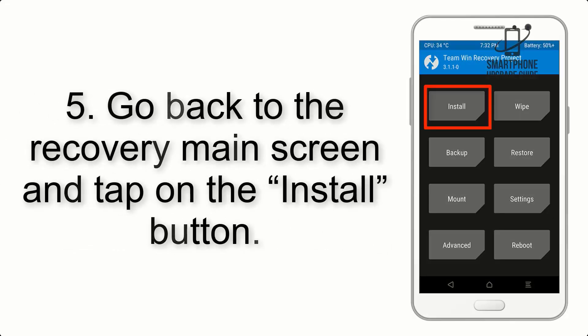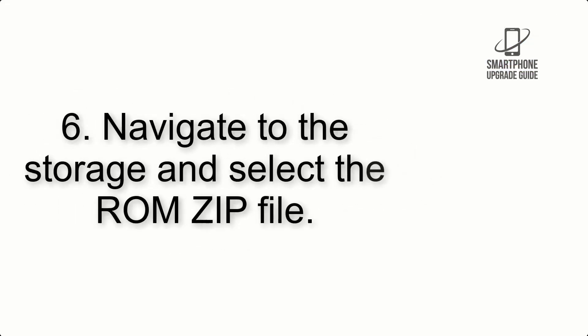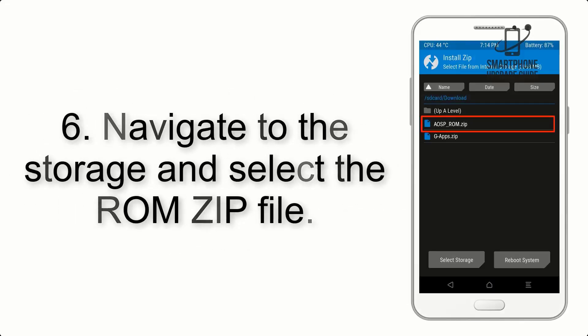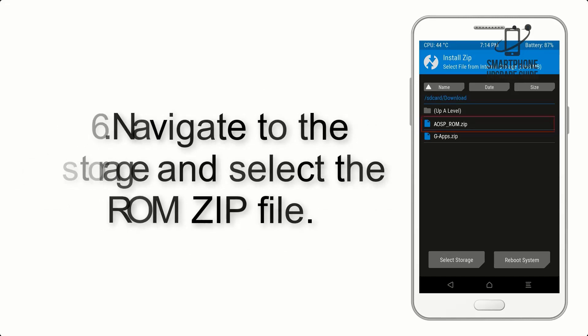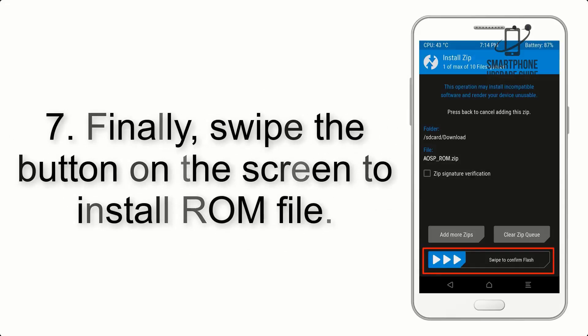Step 4: Swipe the button to wipe the device. Step 5: Go back to the recovery main screen and tap on the Install button. Step 6: Navigate to the storage and select the ROM zip file.